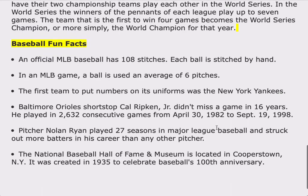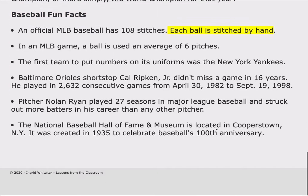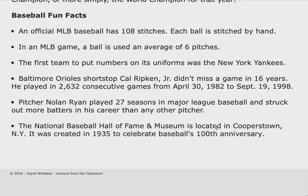Baseball Fun Facts. An official MLB baseball has 108 stitches, and each ball is stitched by hand. In an MLB game, a ball is used an average of six pitches. The first team to put numbers on its uniforms was the New York Yankees. Pitcher Nolan Ryan played 27 seasons in Major League Baseball and struck out more batters in his career than any other pitcher. The National Baseball Hall of Fame and Museum is located in Cooperstown, New York, and was created in 1935 to celebrate baseball's 100th anniversary.